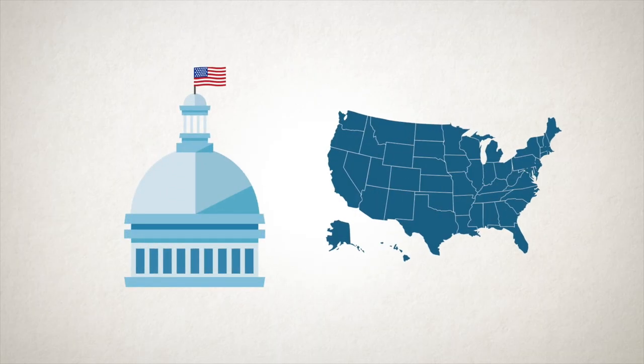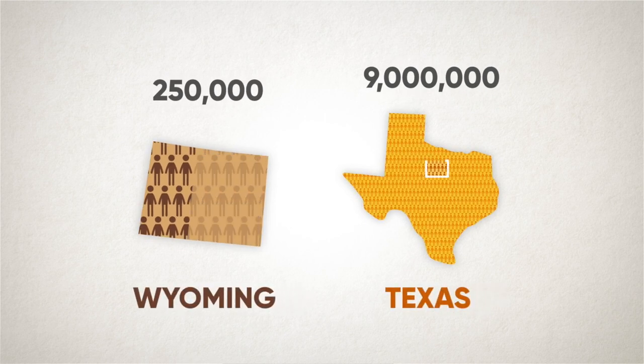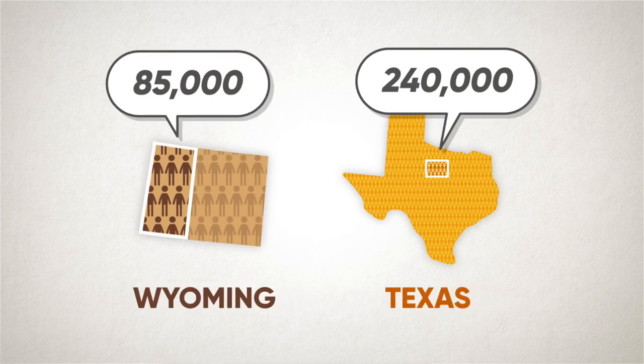They also worry that a national popular vote ignores something important about the way the American government is set up. In the United States, power is divided between national and state governments — this is called federalism. In a federal system, states have a great deal of autonomy and similar political power regardless of their size or population, just like countries do in the United Nations. One way the Electoral College reflects this is by giving every state a minimum of three electoral votes regardless of population. Eliminate the college, they worry, and you might compromise this federal system.